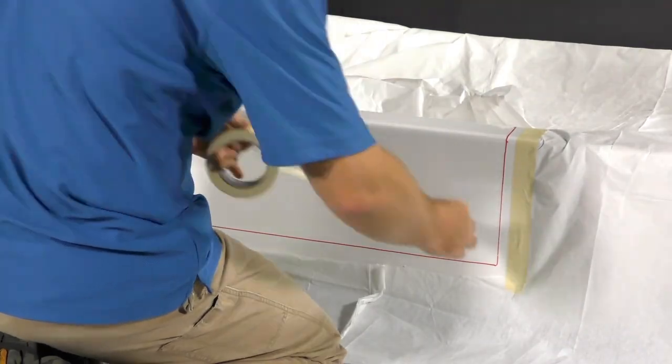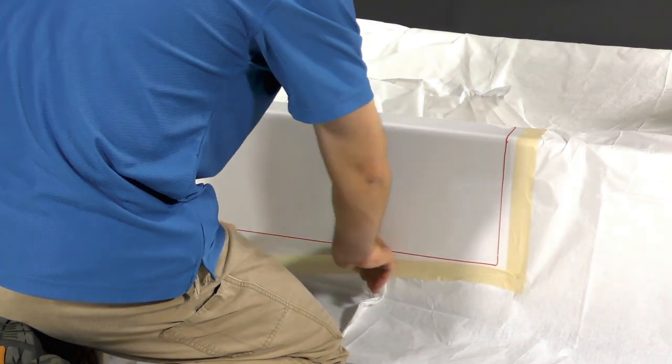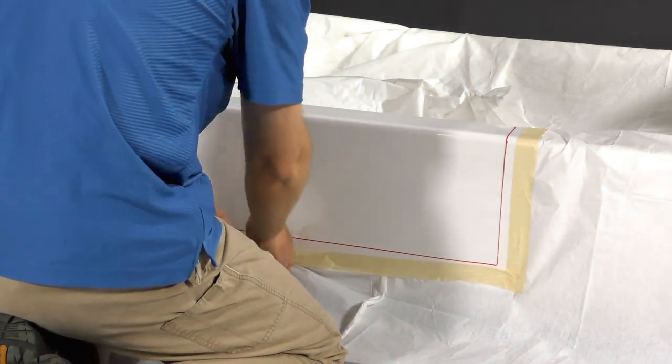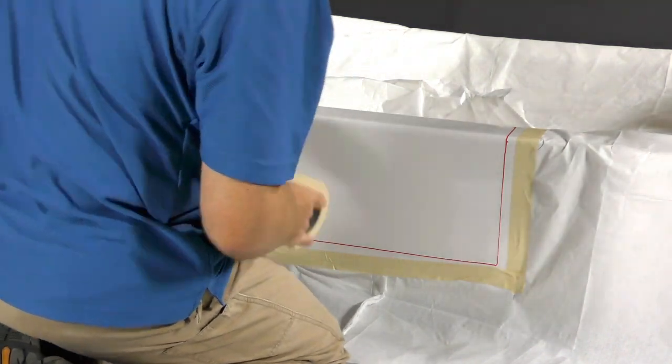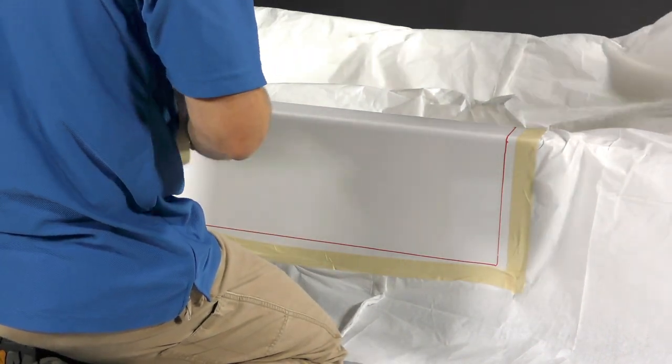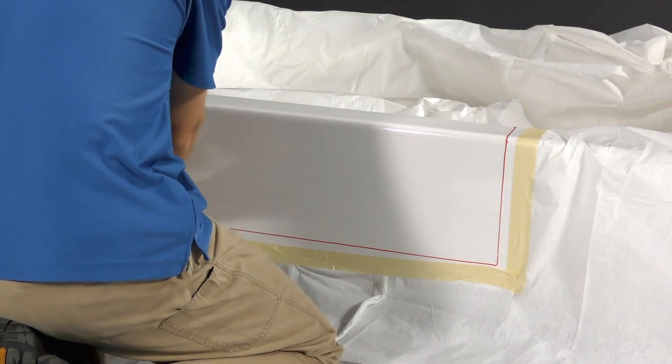The process for cutting cast iron is slightly different. Due to the significant amount of dust created when cutting a cast iron tub, it is recommended that you cover all tub and exposed bathroom walls and surfaces with a two-ply drop cloth to minimize the amount of dust that can settle.